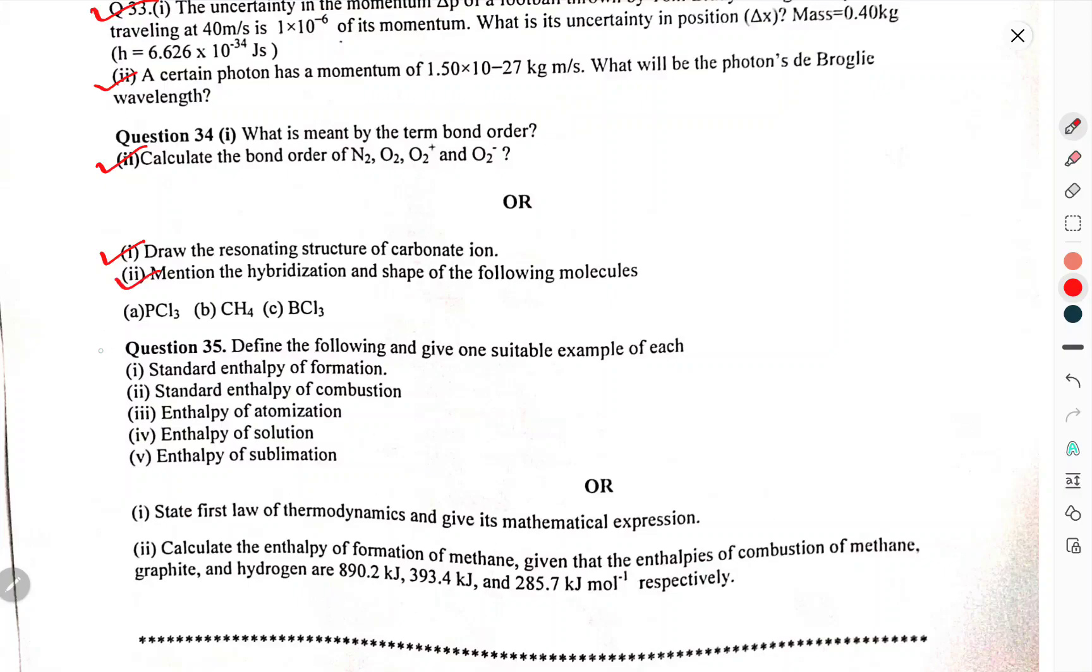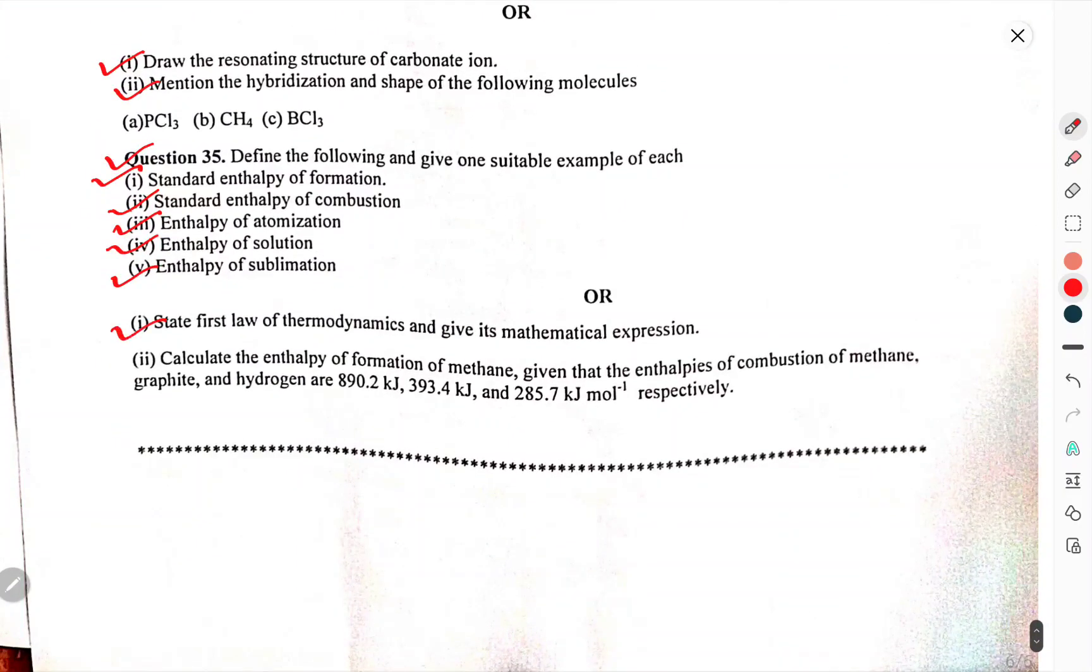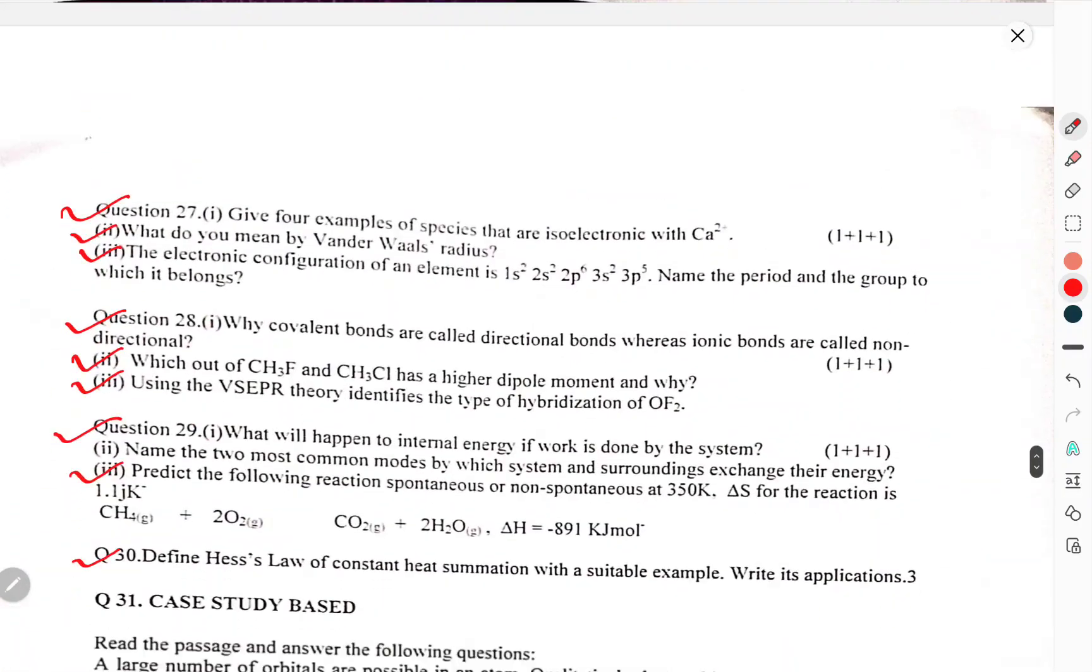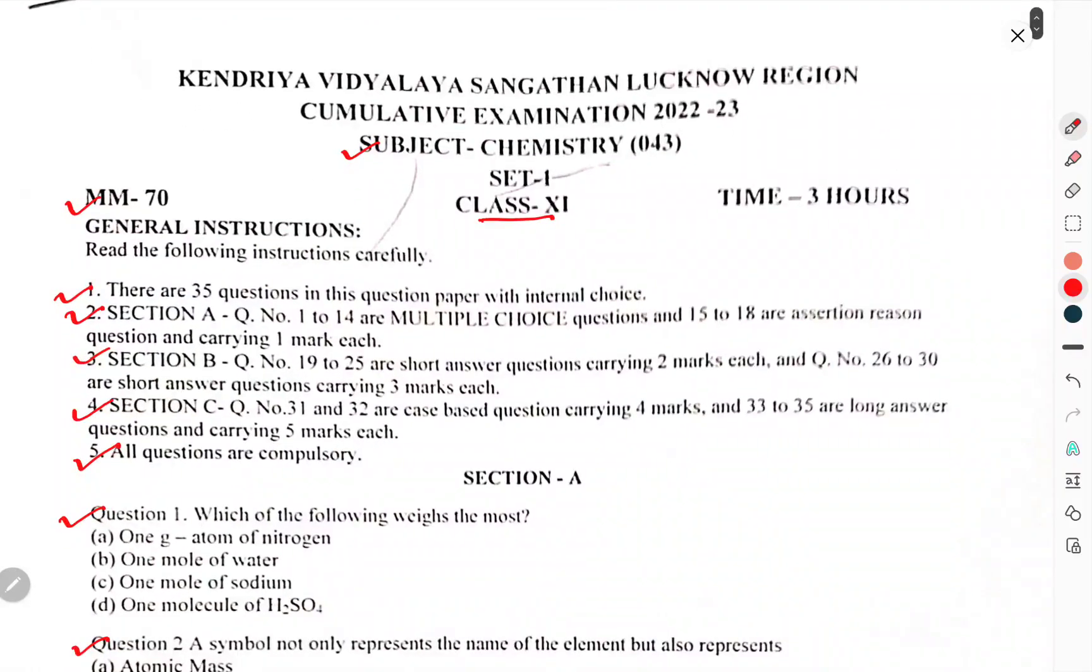Define the following and give one suitable example of each: Standard enthalpy of formation, standard enthalpy of combustion, enthalpy of atomization, enthalpy of solution, enthalpy of sublimation. State the first law of thermodynamics and give its mathematical expression. Calculate the enthalpy of formation of methane given that the enthalpies of combustion of methane, graphite, and hydrogen are given respectively. This was the question paper of Class 11th half-yearly examination Chemistry. That's enough for this one. Thank you!